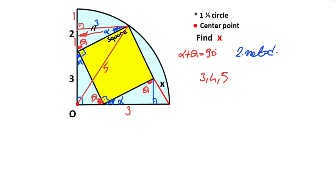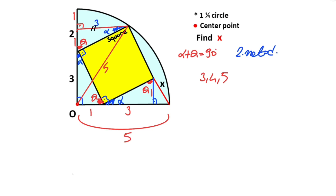Notice that if there is one unit opposite alpha, then the side opposite alpha here must also equal one unit. Likewise, the side opposite alpha here is also one unit. The radius of the quarter circle is five, so one unit is left here as well. As a result, we get an isosceles right triangle. If there is one unit opposite each 45-degree angle, the hypotenuse opposite 90 degrees must equal the square root of 2.